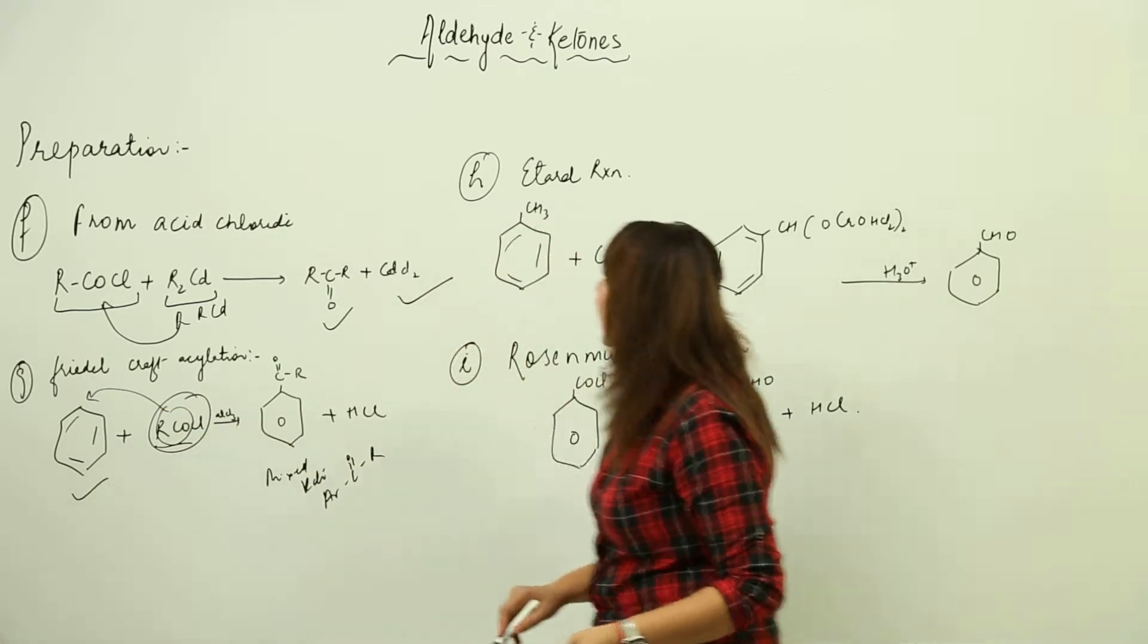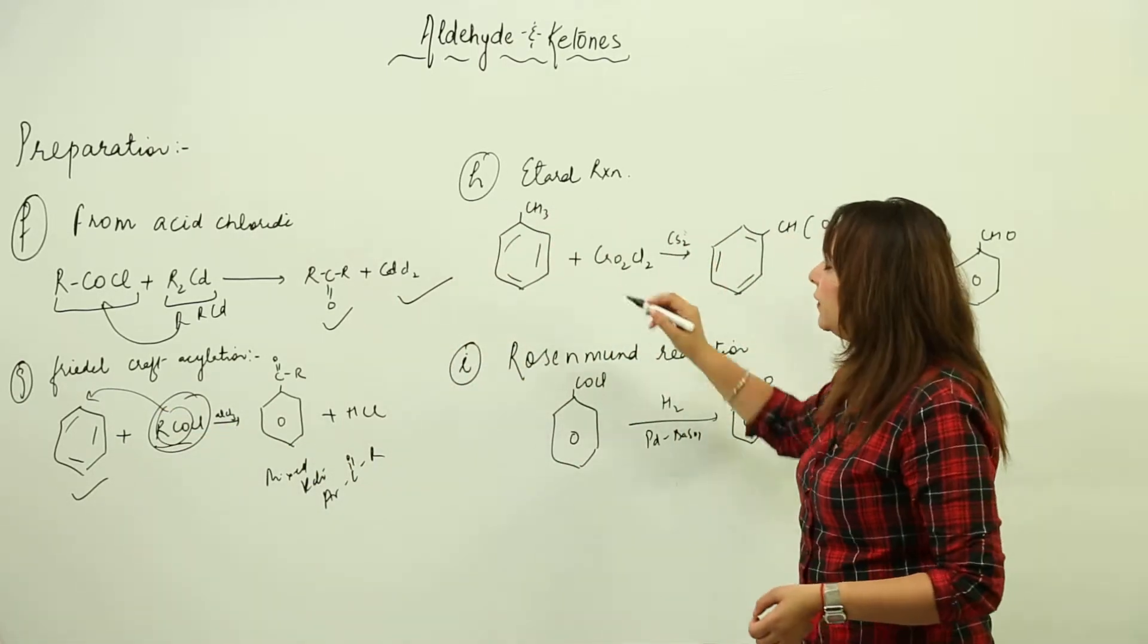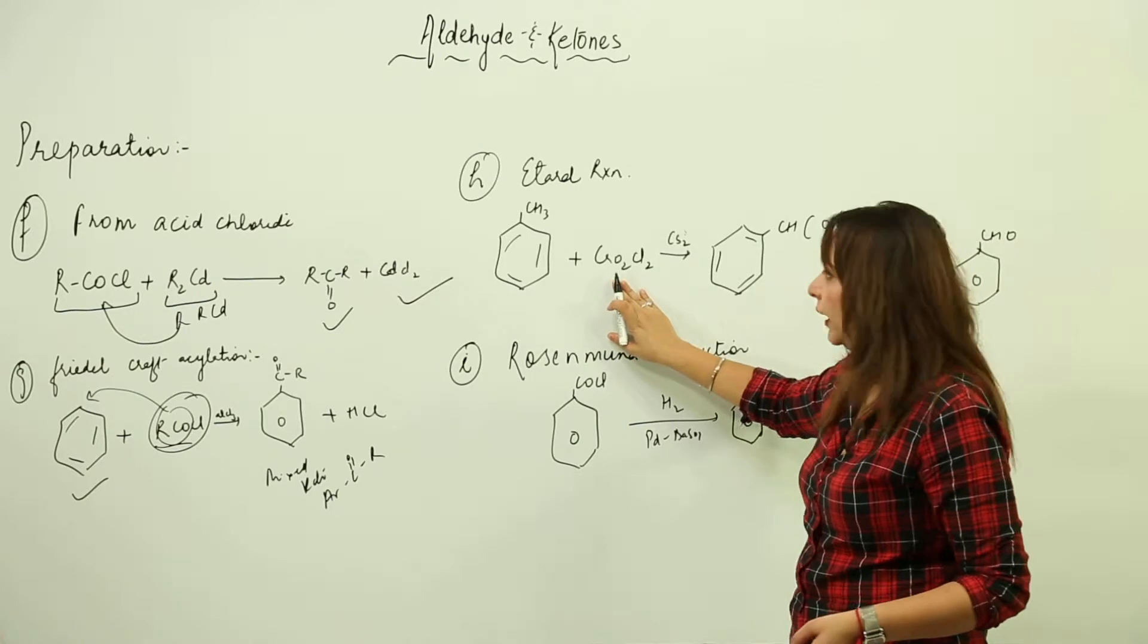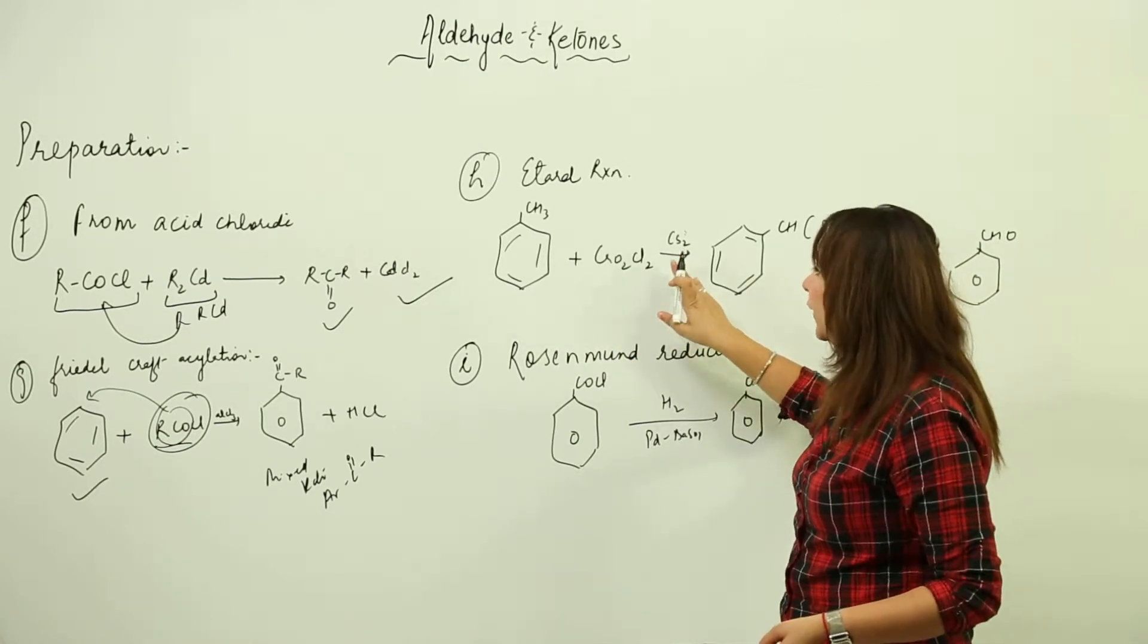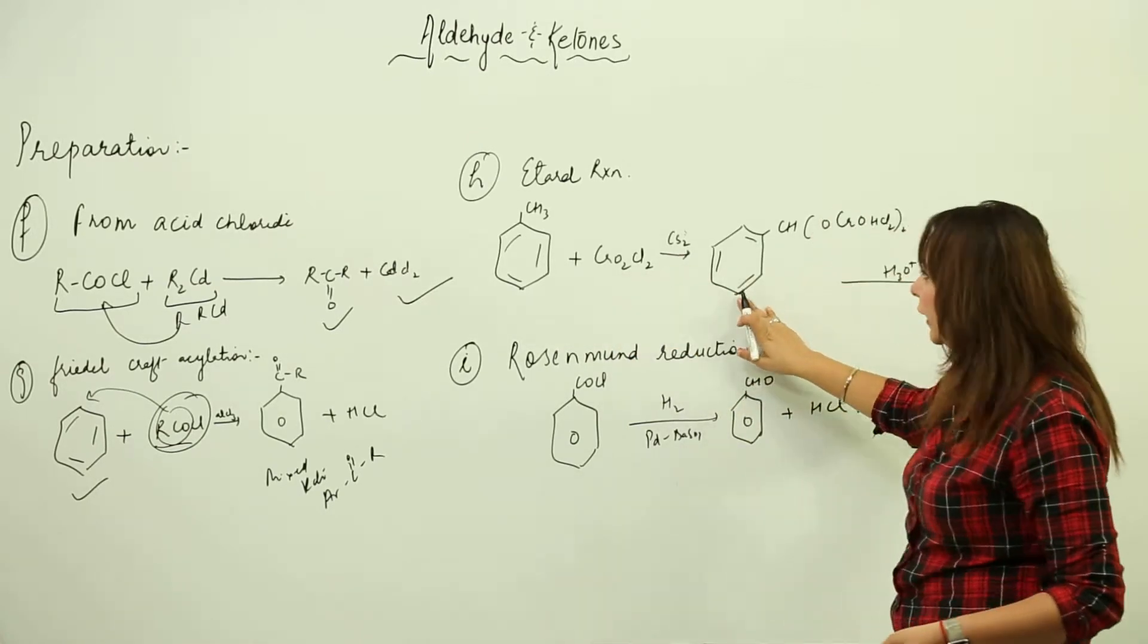Next is the Etard reaction where you have toluene, you're going to react with chromyl chloride in presence of CS2.